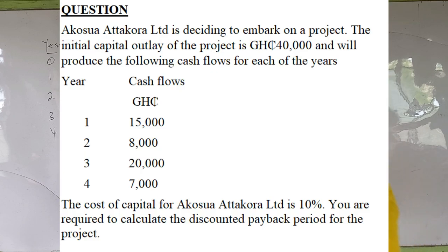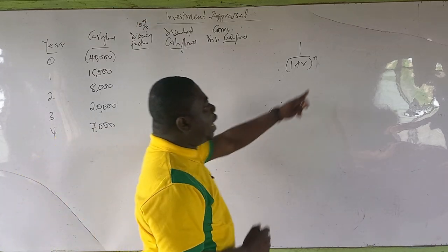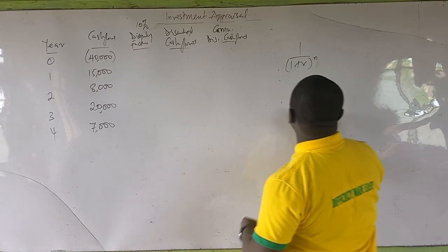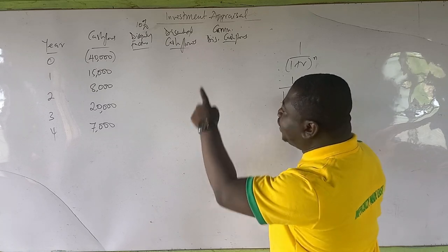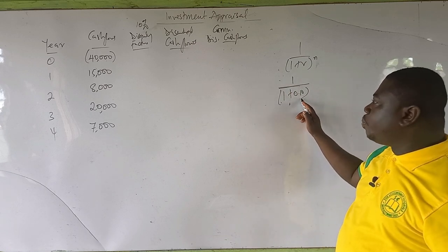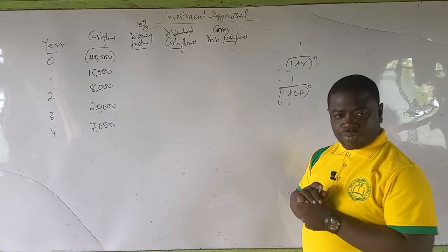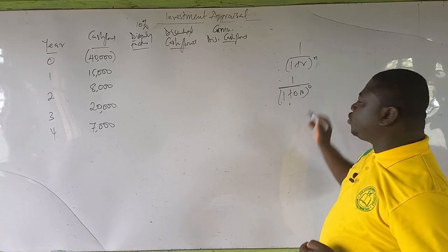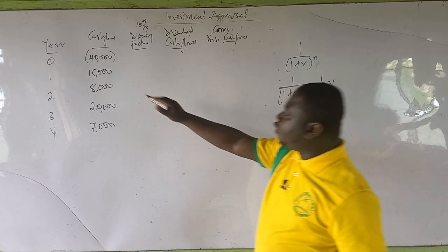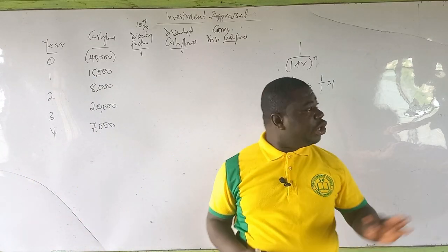The company's cost of capital is 10%, so R equals 0.10, and N is the number of years. For year 0, it is 1 over (1 plus 0.10) raised to the power 0. Any number raised to the power 0 is 1, so this gives us 1 over 1, which is 1. So the discounting factor for year 0 is 1. There are present value tables you can use, but I'm showing you how to calculate it directly.